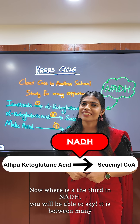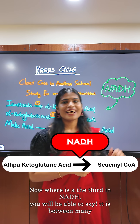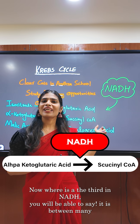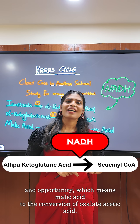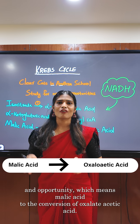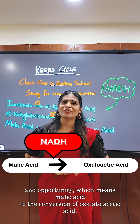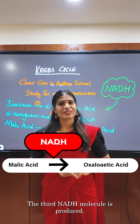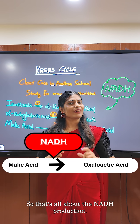Now where is the third NADH? It is between 'many' and 'opportunities,' which means during the conversion of malic acid to oxaloacetic acid, the third NADH molecule is produced. So that's all about the NADH production.